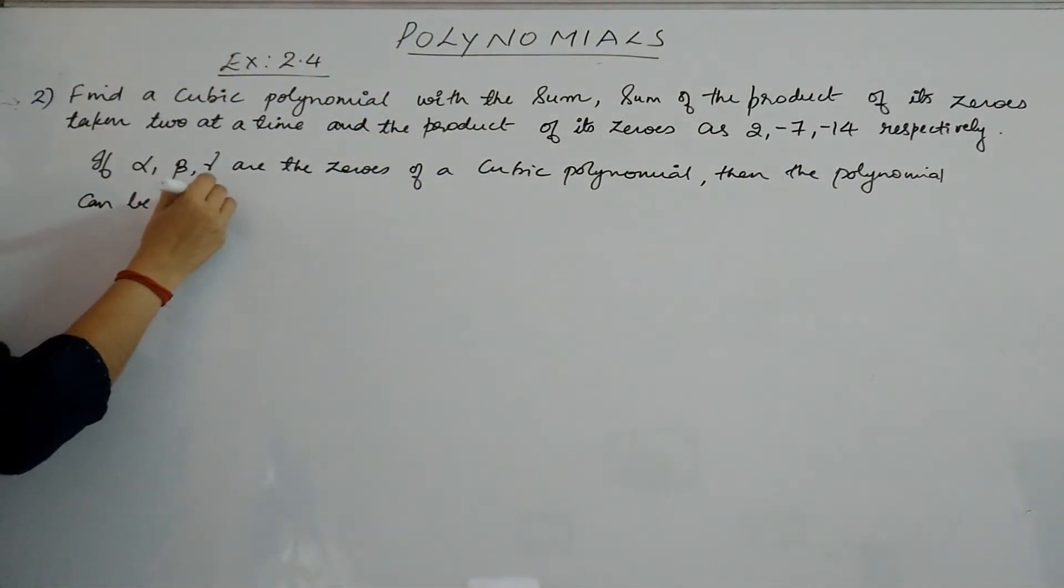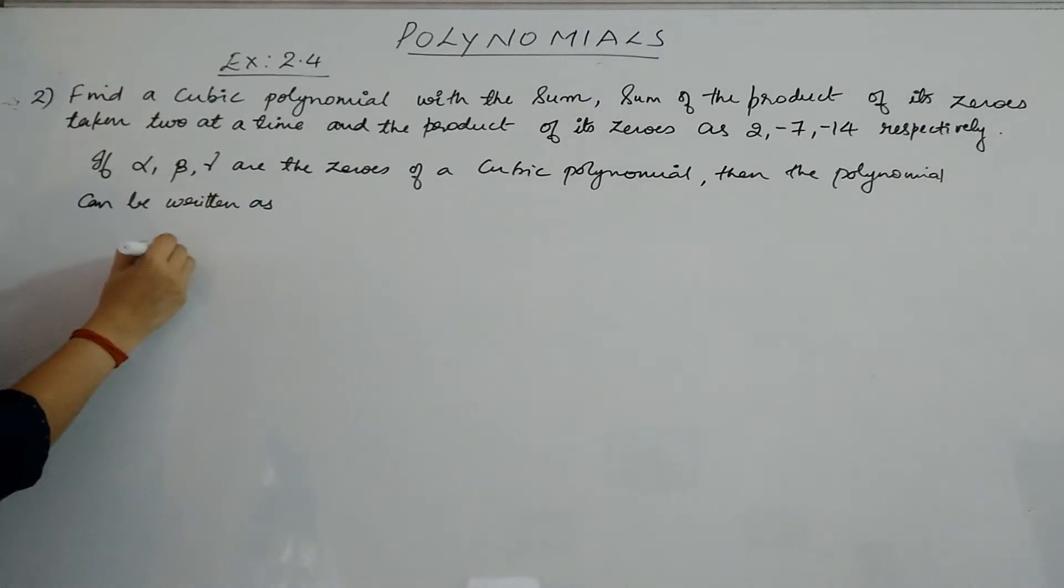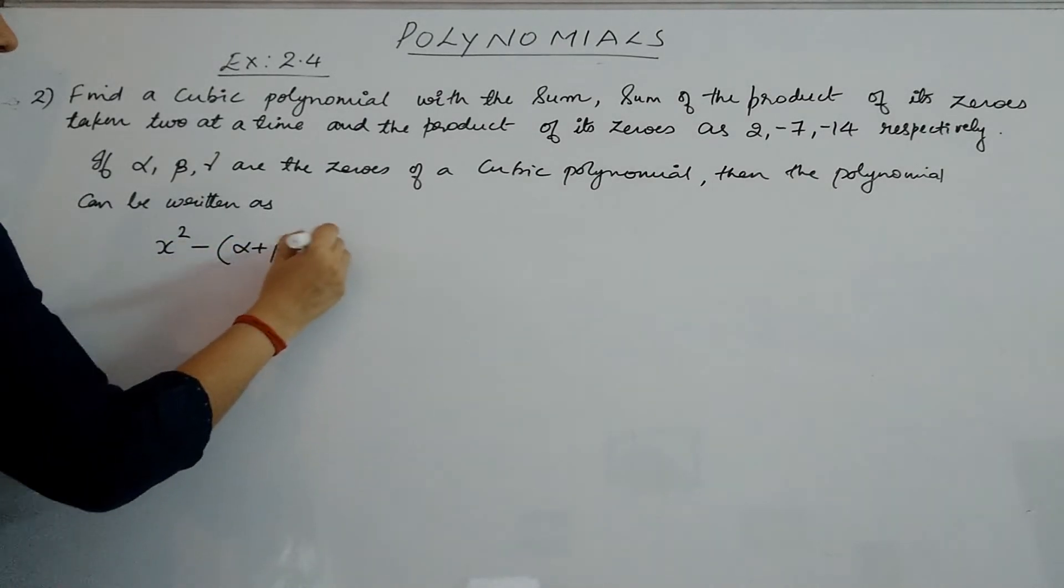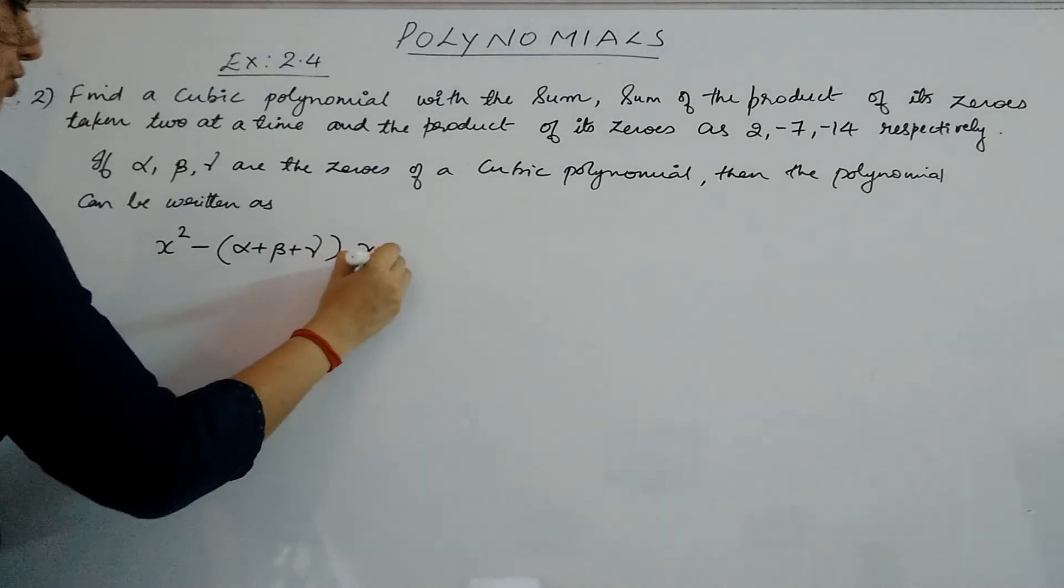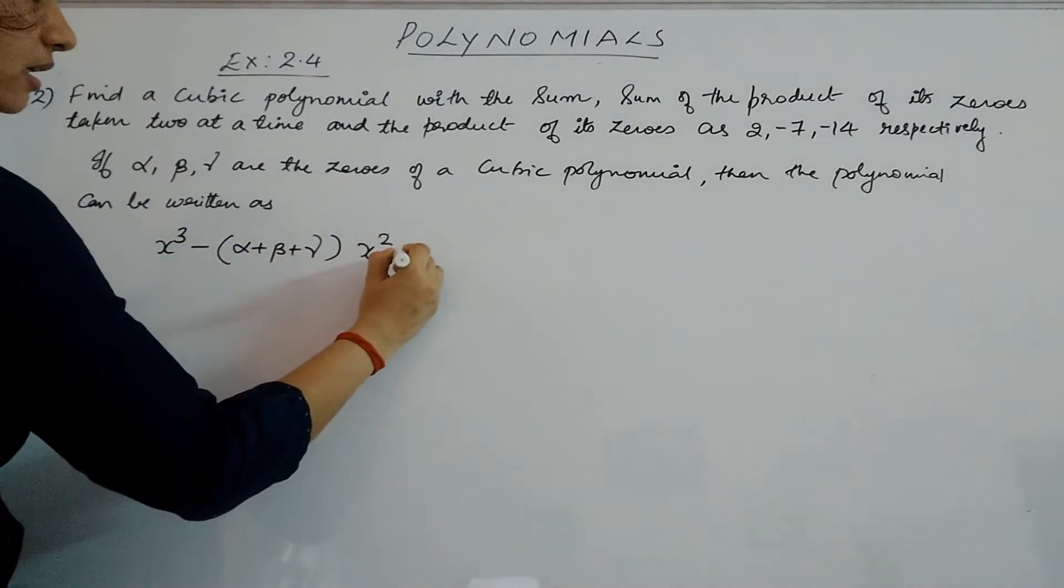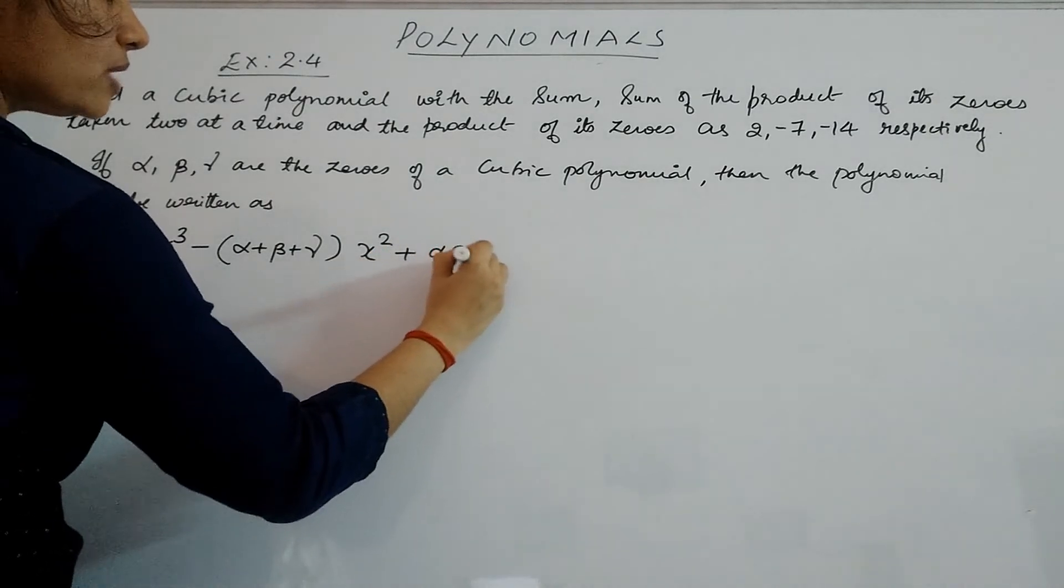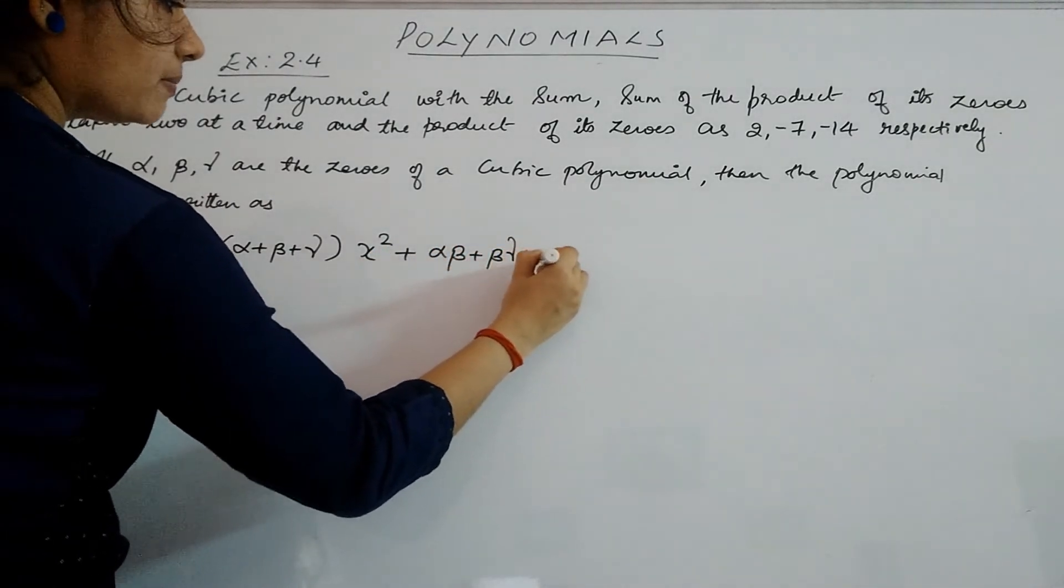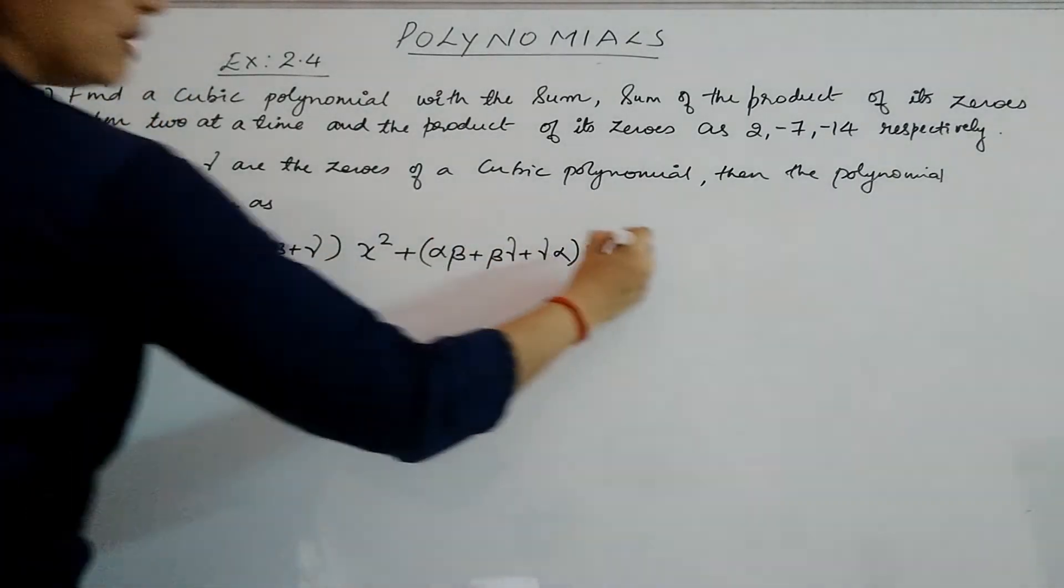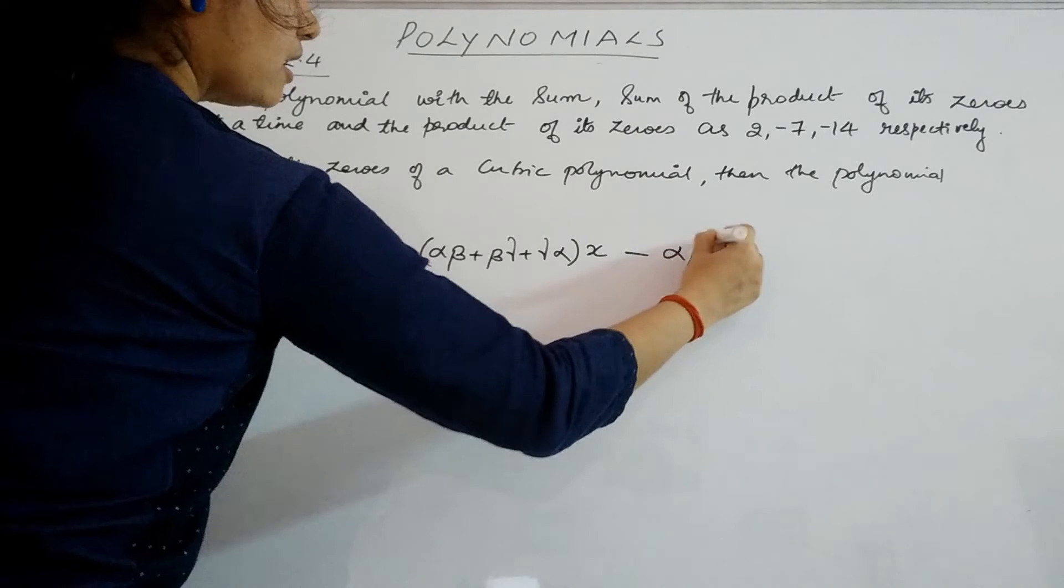x³ minus (α + β + γ)x², plus (αβ + βγ + γα)x, minus αβγ.